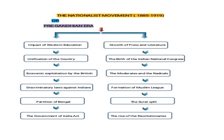In this lesson we will discuss about the impact of Western education, unification of the country, economic exploitation by the British, discrimination laws against the Indians, partition of Bengal, the Government of India Act, growth of press and literature, the birth of the Indian National Congress, moderates and radicals, formation of Muslim League, Surat Split, and also the rise of revolutionaries.